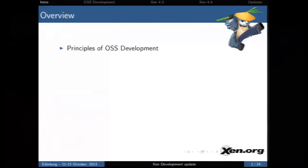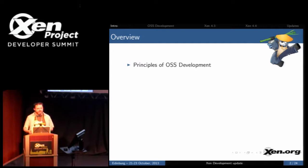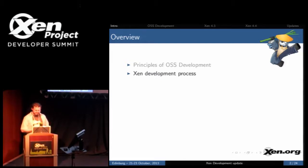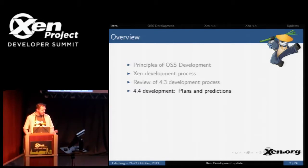We have a lot of new people to the community, and from interacting on the list and face-to-face, I think it would be good to go over the development principles for the open source project. We're going to start with some principles of OSS development at a high level, then look at how we apply those to the Xen development process, review 4.3, go into 4.4, and then have project updates for individual projects.